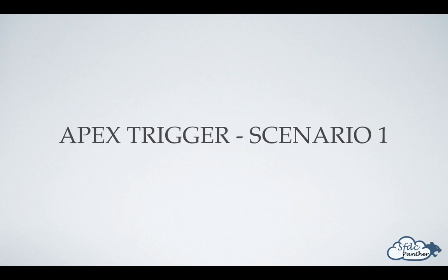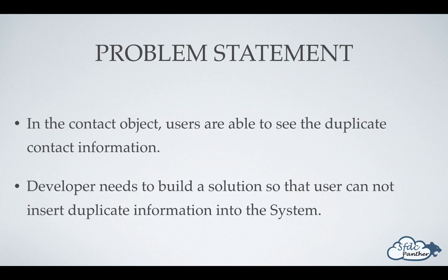Hey everyone, welcome again. In this video we will discuss a problem, then see what are all possible solutions for that problem, and then develop that problem with the help of our Apex trigger. First, let's see what the problem statement is: in our Contact standard object, users are able to see duplicate records based on fields like email, first name, and last name.